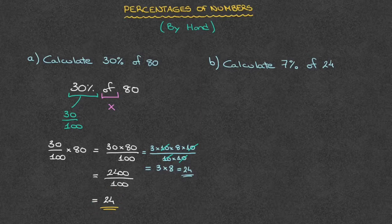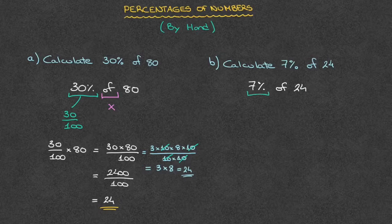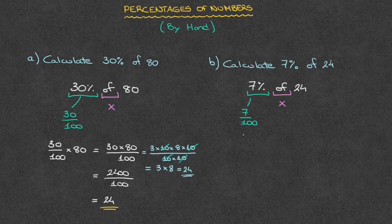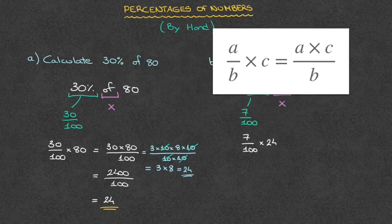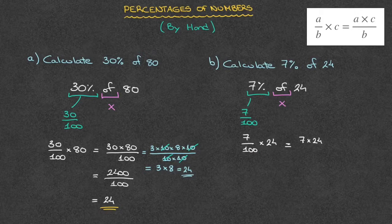Now let's look at the second example. We have to calculate 7% of 24. The thinking process is still the same: 7% means 7 over 100, and the word 'of' means times. So 7% of 24 equals 7 over 100 times 24, which equals 7 times 24 over 100.